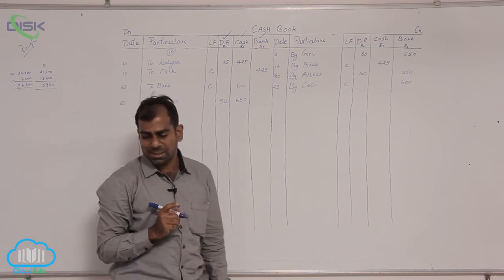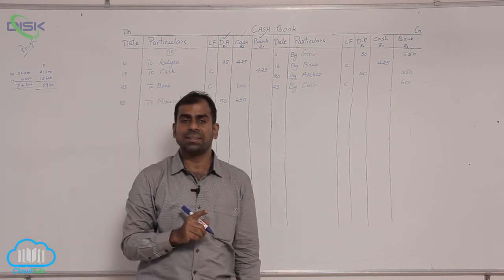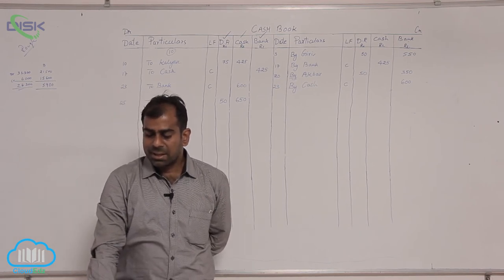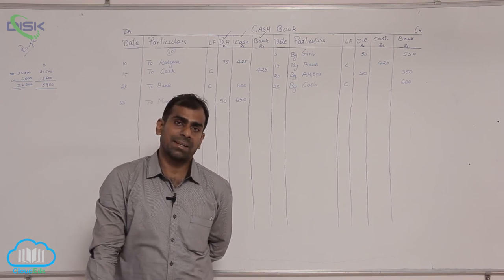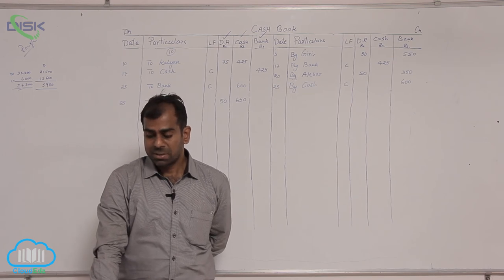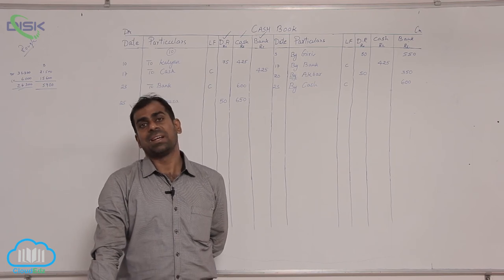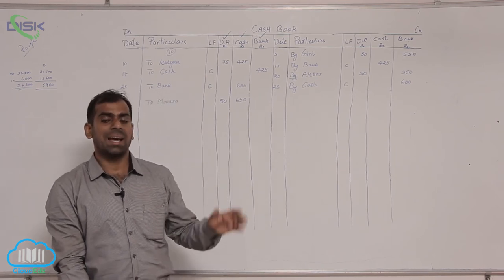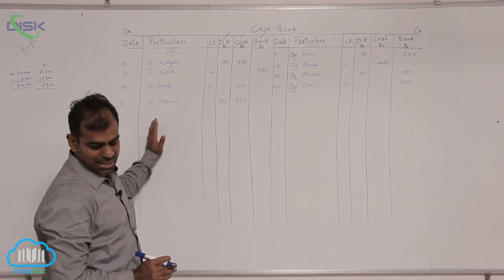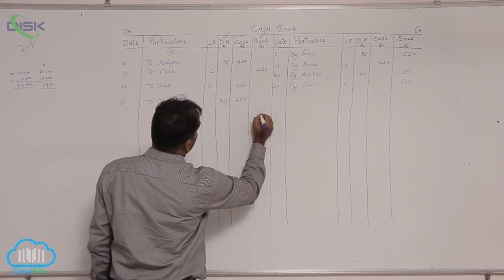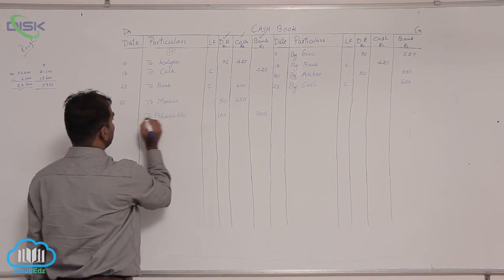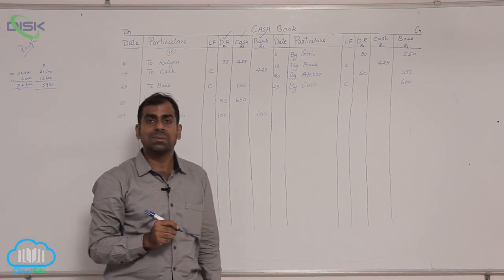The next transaction on the 29th: received check from Bharat — discount allowed — and Bharat's check is sent to bank on the same day on which it was received. When a check is deposited in the bank on the same day it is received, the treatment is straightforward — since it is a check going directly to bank, record it in the bank column on the receipt side. Enter 700 in the bank column, discount allowed 100 in the discount allowed column, Bharat's name in the particulars column, and the date being 29th.